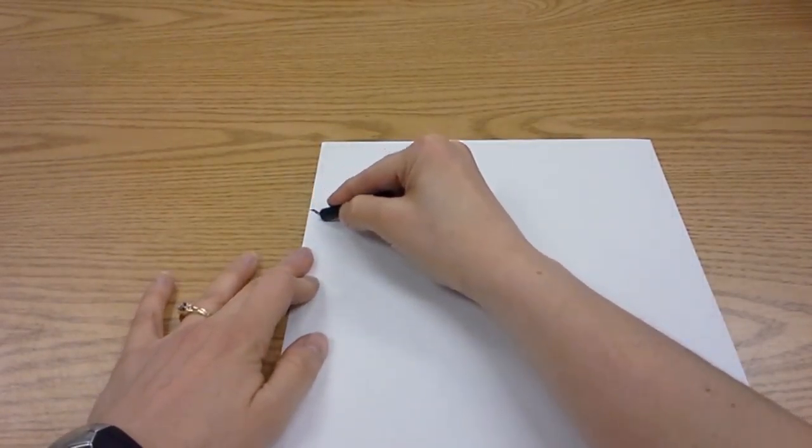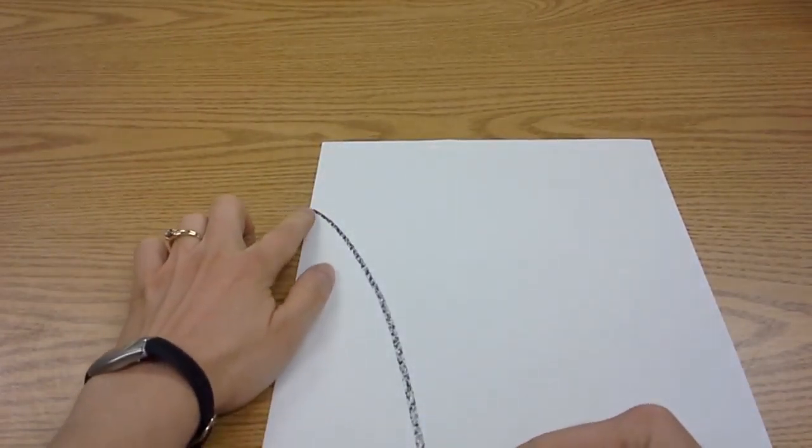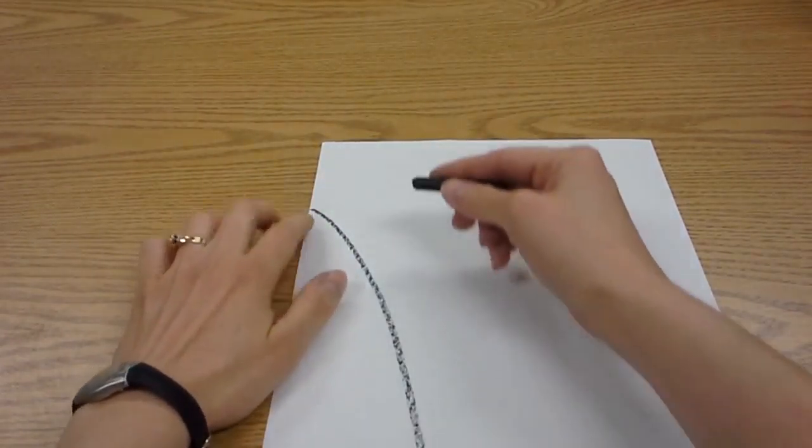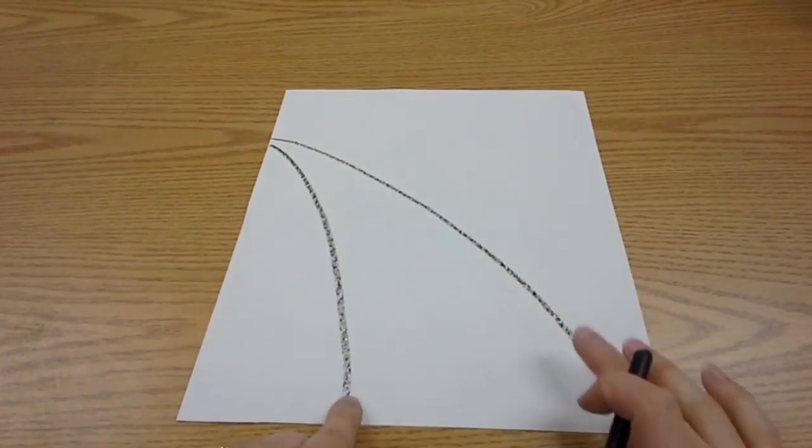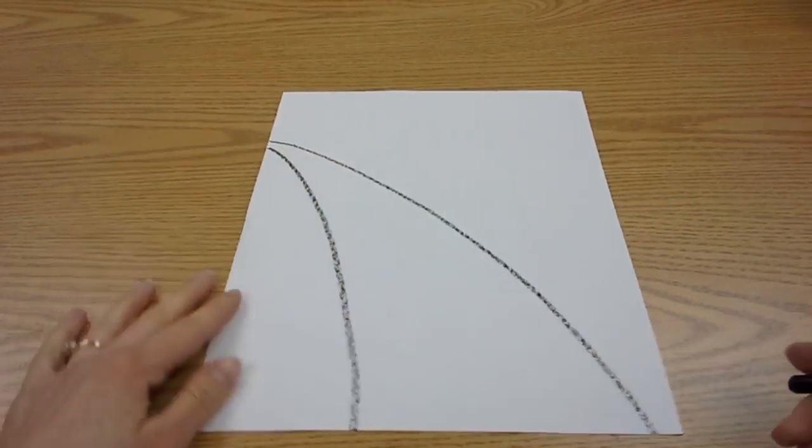So first things first, we're going to take a crayon and from the left side of your paper draw two lines and they're going to get farther apart as they come towards us. This makes it look like the road is big when it's close and it's small when it's far away.